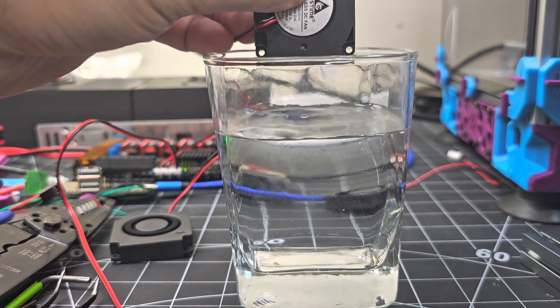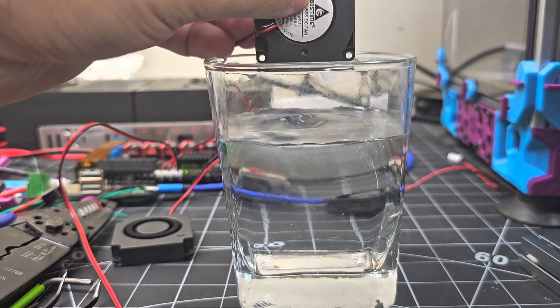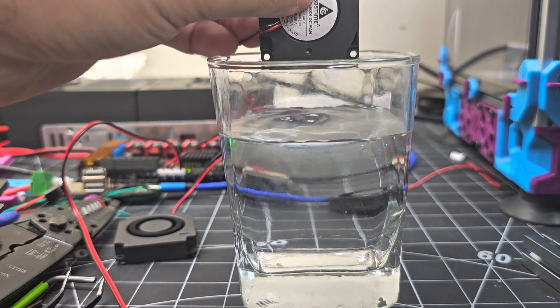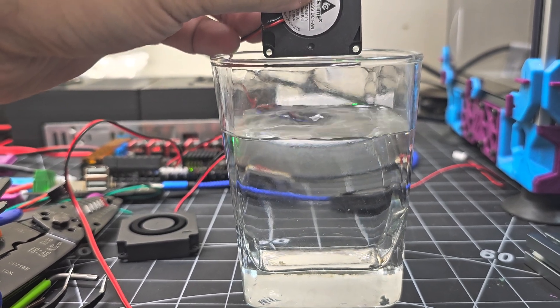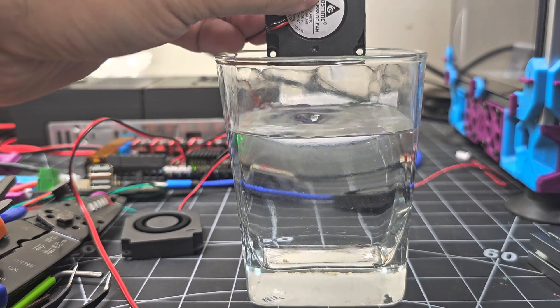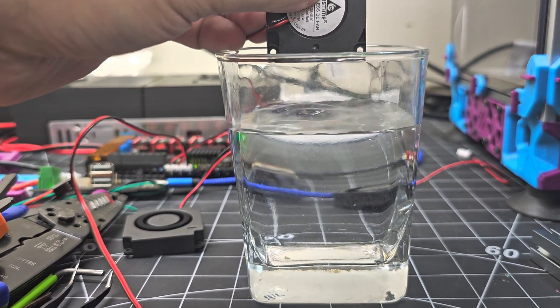So with the GDS Time fan, noticeable difference in water displacement, so I would argue that's an indicator of higher cubic feet per meter or airflow.